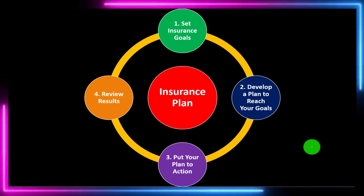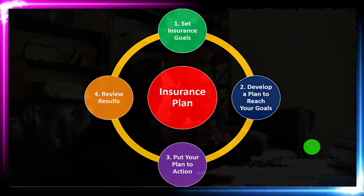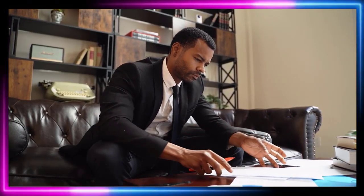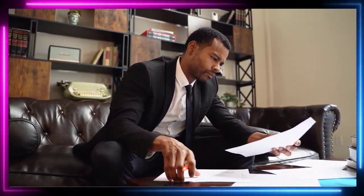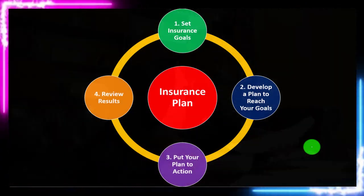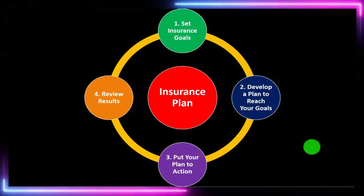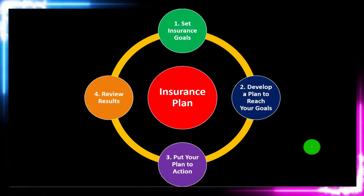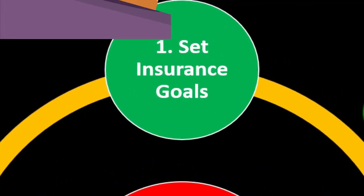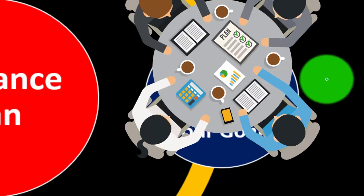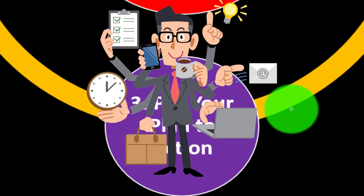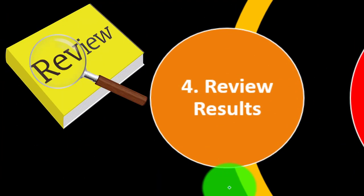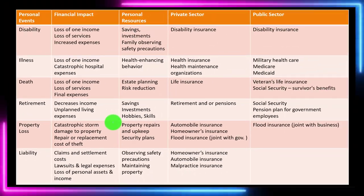We've been categorizing our financial decisions as short-term or long-term. Short-term decisions are those where we train our gut to trust our gut. Long-term decisions use the adage of measure twice, cut once — a more formal process: set our insurance goals, develop a plan to reach the goals, put the plan in action, then review the results and start the process over again.